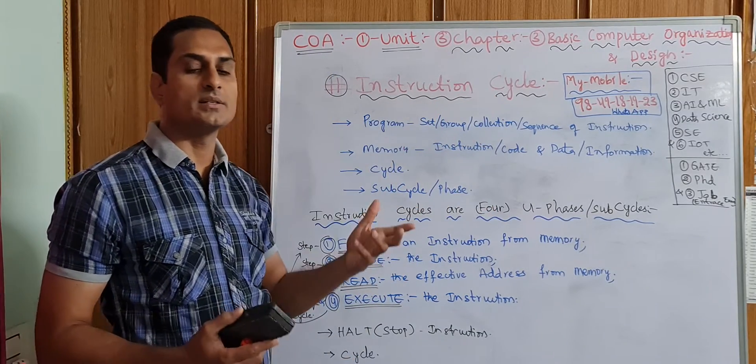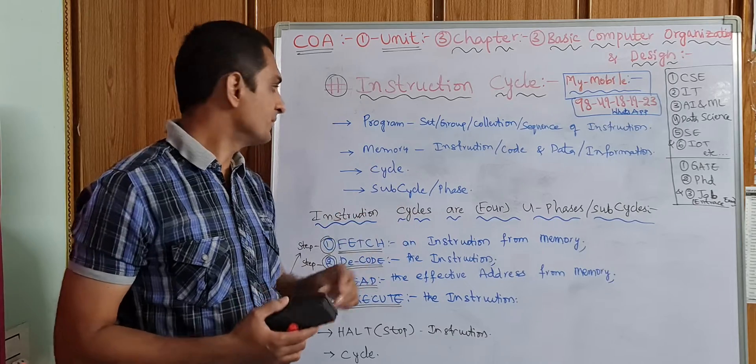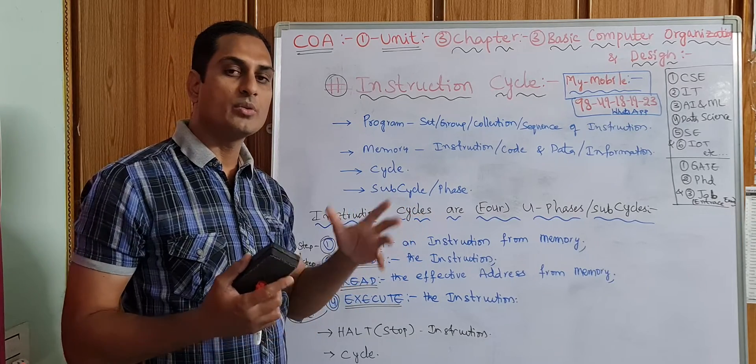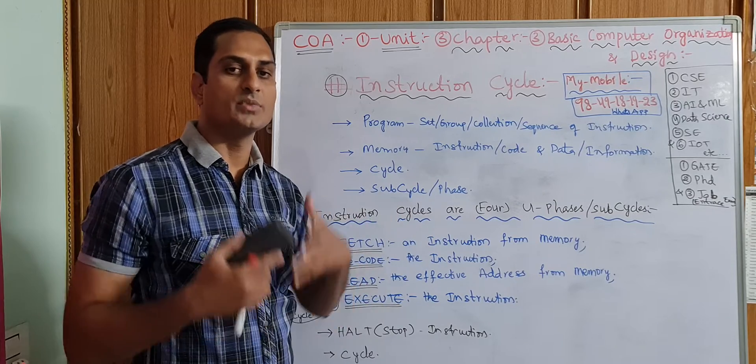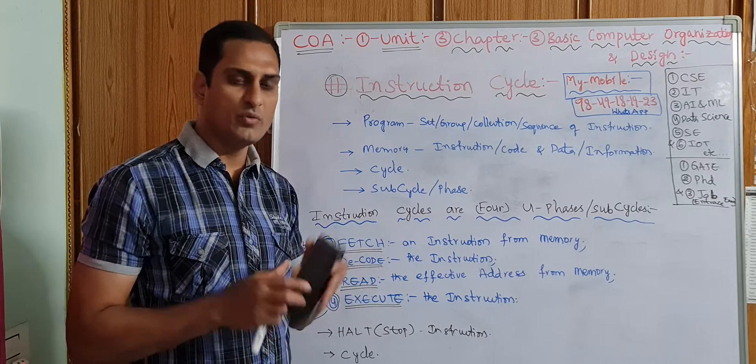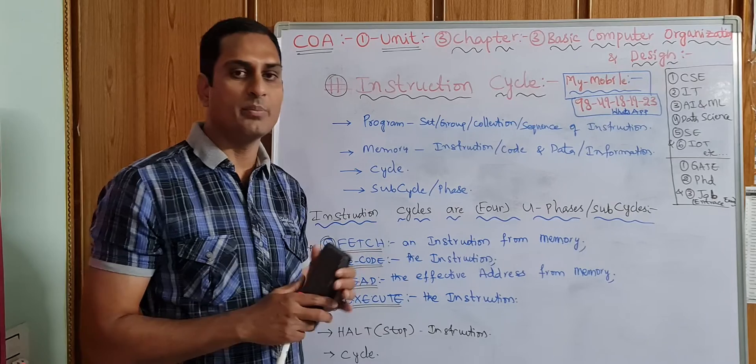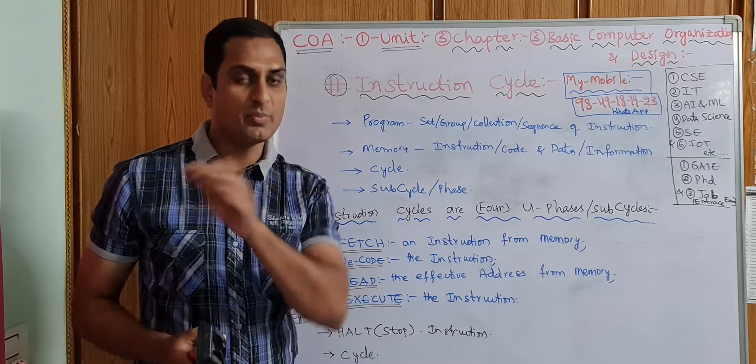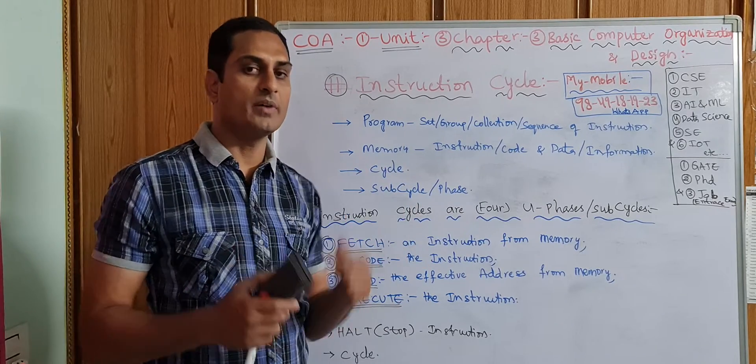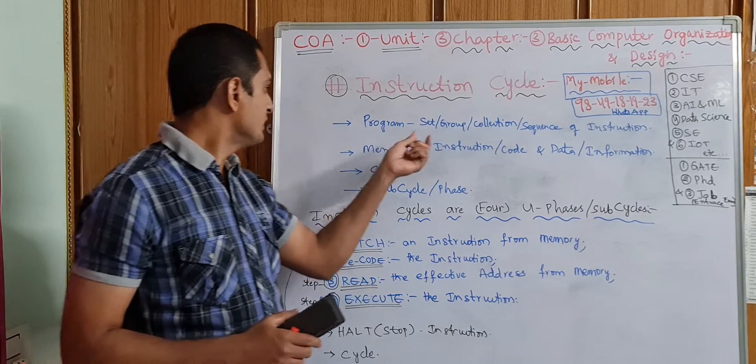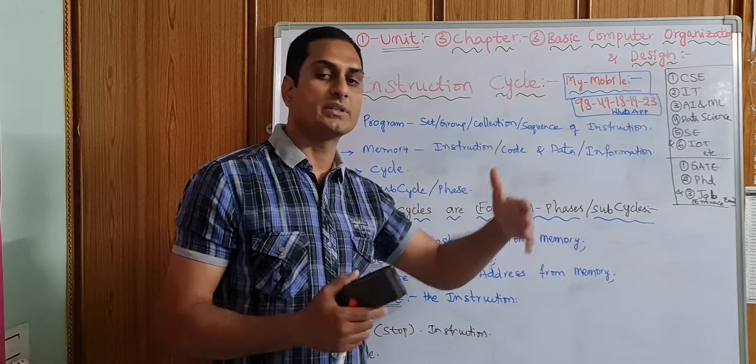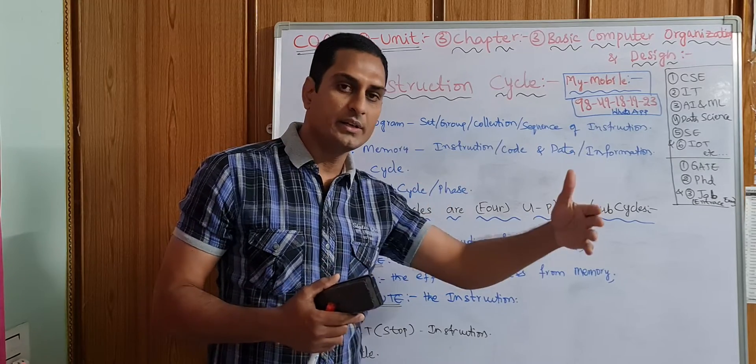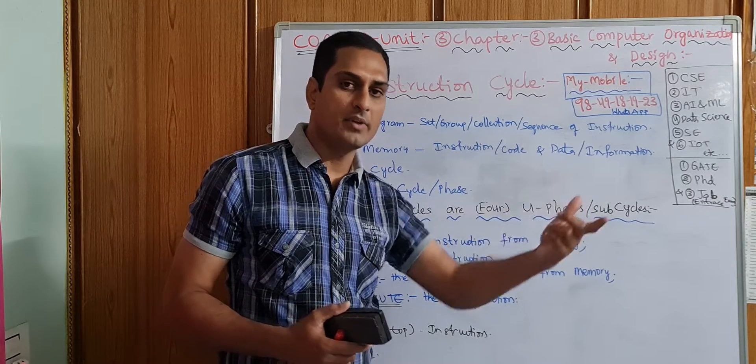Instruction cycle. What are instructions? Commands, set of rules in a program, in a computer. If you want to perform any operation—addition of two numbers, C program, Java program, Python program—a set of instructions should be executed one by one. That is called a program. A set or group or collection of sequence of instructions, when it is executed, a command will be executed.